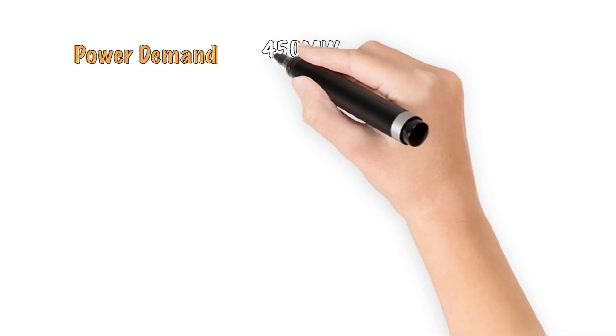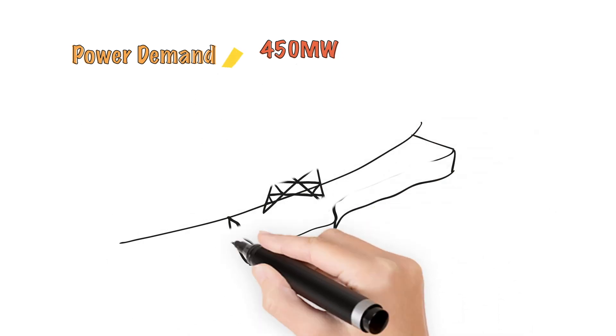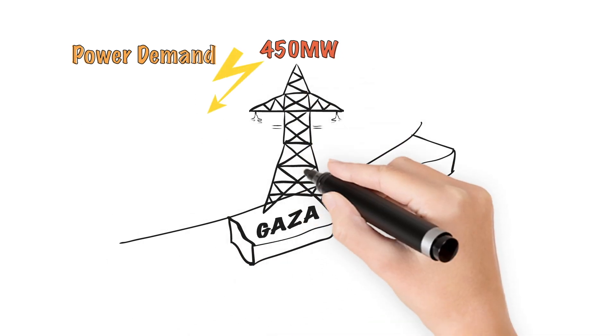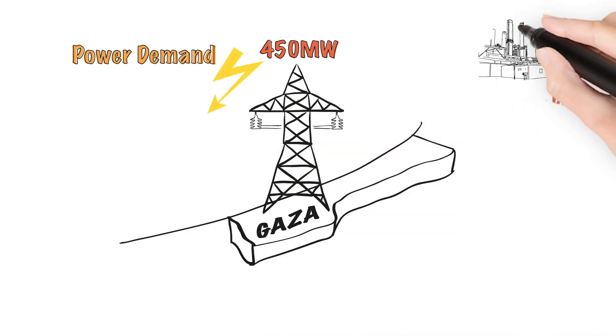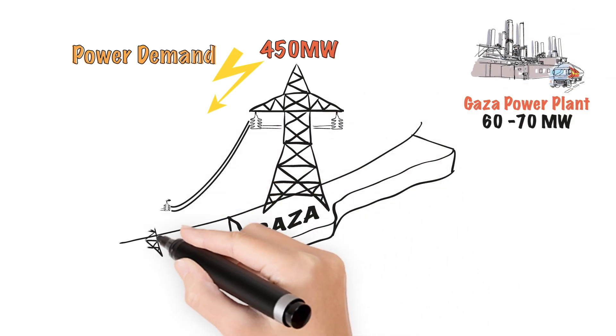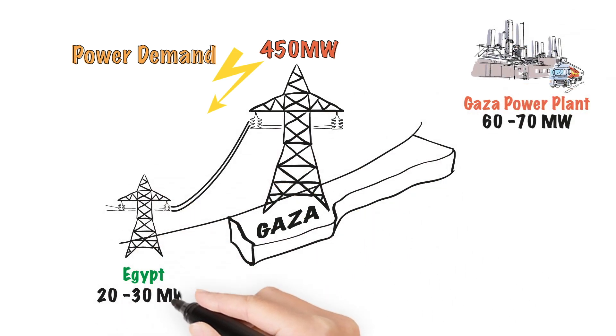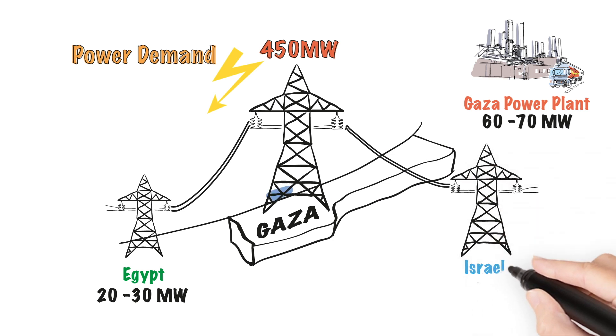Gaza has a power demand of 450 megawatts. In terms of supply, the Gaza power plant provides 60 to 70 megawatts of power. About 20 to 30 megawatts are imported from Egypt and 70 to 120 megawatts from Israel.